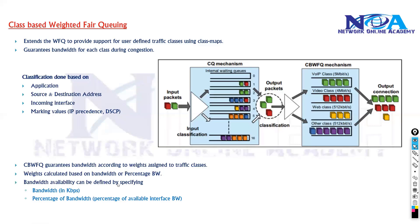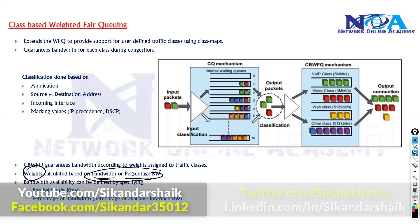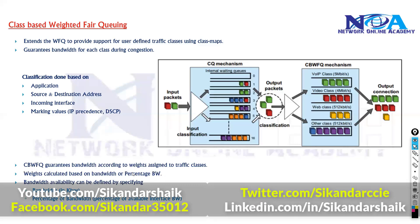In the configuration example, we'll see how this is done. Weights are added depending on the bandwidth, so that particular queue will utilize at minimum that much bandwidth in case of any congestion.